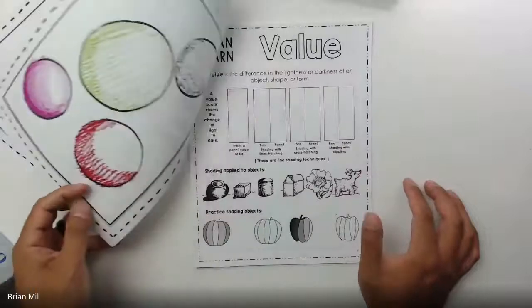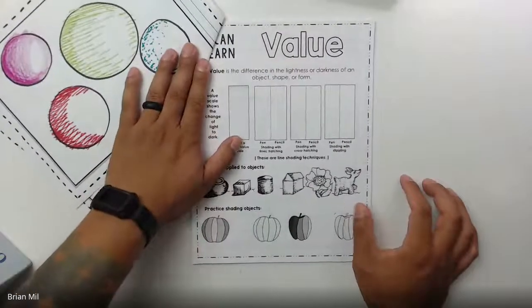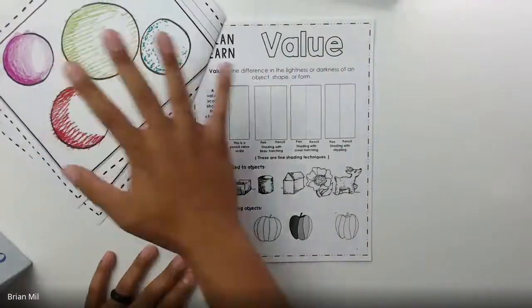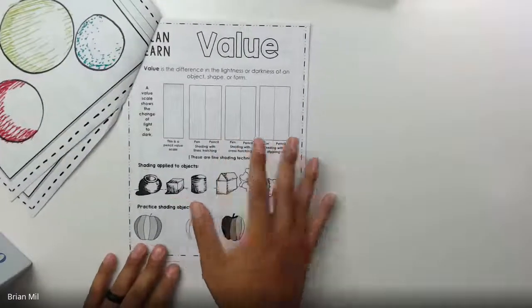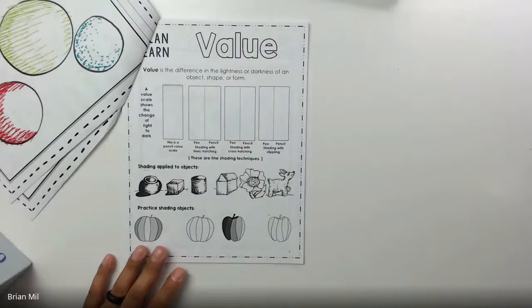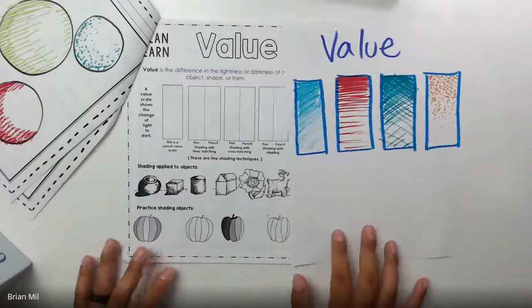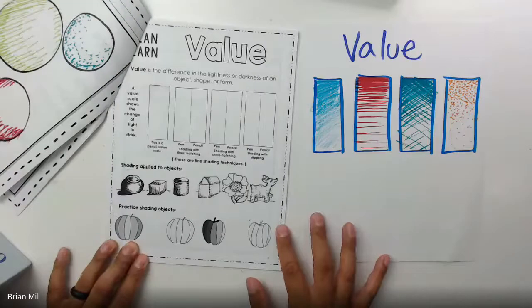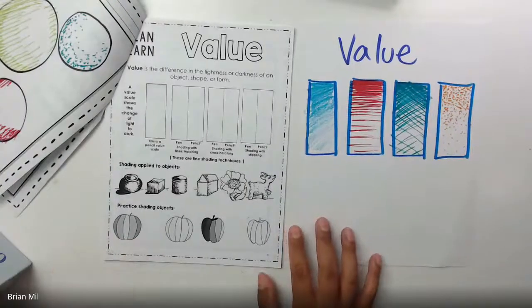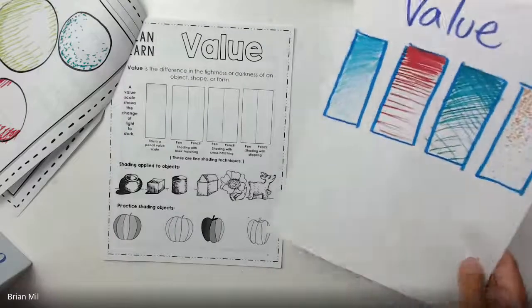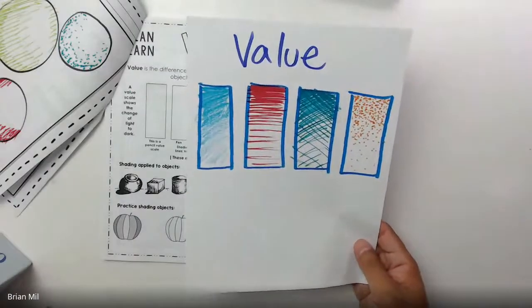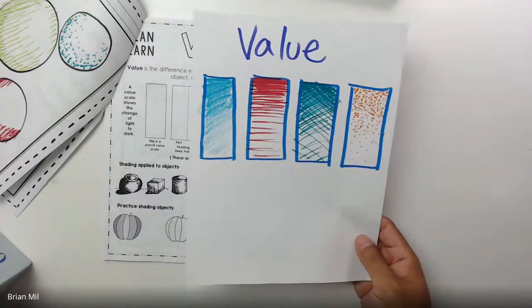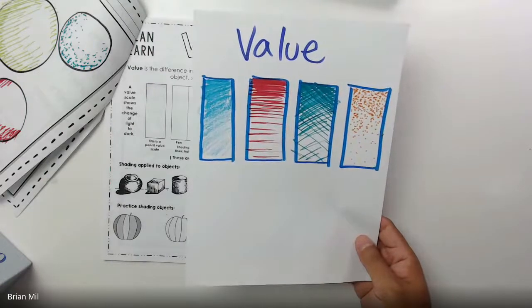Now, next page. This next page is called value. You don't need to worry about this stuff right here. That was from last class. Let's just talk about this page. So again, if you don't have this workbook, it is possible for you guys to do it on a blank sheet of paper like how I did over here from last class.